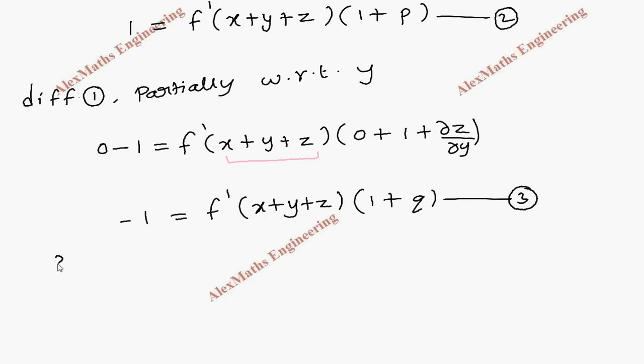Now we are going to divide the second expression by the third expression to eliminate the function. So on the left hand side we have 1 by minus 1 and on the right hand side when we divide, the f' term gets cancelled. So the remaining will be 1 plus p by 1 plus q.